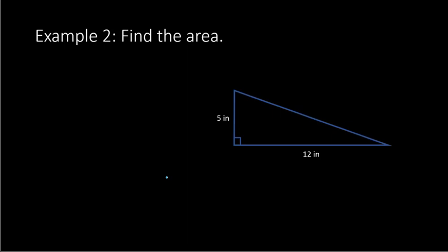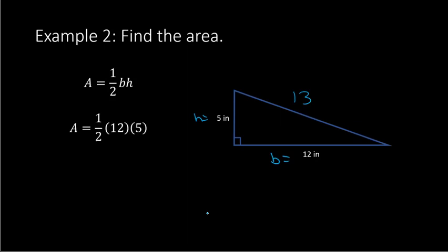Here's another example. We are given a height of 5 inches, a base of 12 inches, and the hypotenuse would be 13 in this example. The base and height are the parts perpendicular to each other at 90 degrees. So 12 is your base and 5 is your height. Plugging into the formula: 1/2 × 12 × 5. You can do 1 half of 12 first — that's 6 — and then 6 times 5 is 30. So the area is 30 inches squared.